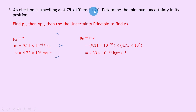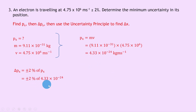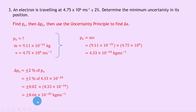Now we find the uncertainty in this value, which relies solely on the uncertainty in the speed. We were given a speed value plus or minus 2 percent, but we don't have an uncertainty in mass, so we assume the uncertainty in the electron's mass is zero. That means the uncertainty in the momentum is the same percentage as the uncertainty in the speed. So delta px is plus or minus 2 percent of px, which is 0.02 times 4.33 times 10 to the minus 24, giving plus or minus 8.66 times 10 to the minus 26 kilogram meters per second.